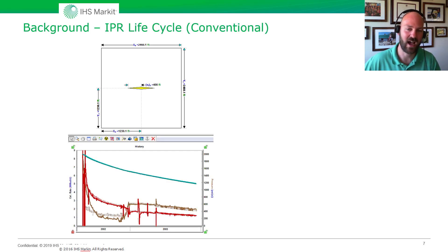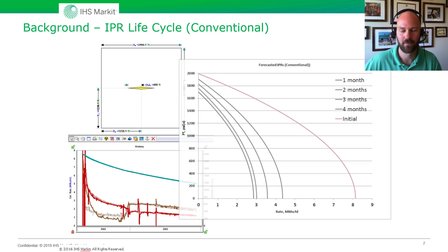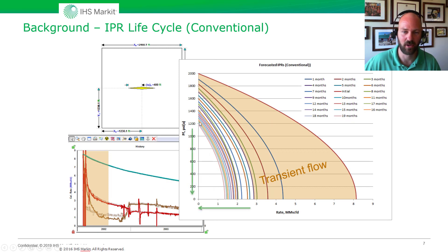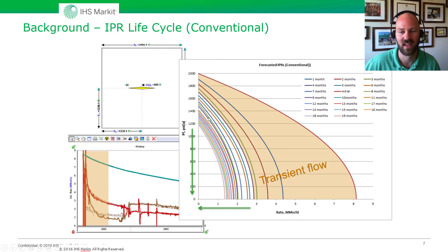Let's imagine we have a high-permeability reservoir — one millidarcy. If we look at the life cycle of an IPR, after a few months or maybe even shorter, the well is going to reach boundary-dominated flow and the IPR is going to stabilize. This IPR curve on the left is all during the boundary-dominated flow part of the well's life, and that's where these traditional IPR methods are great.